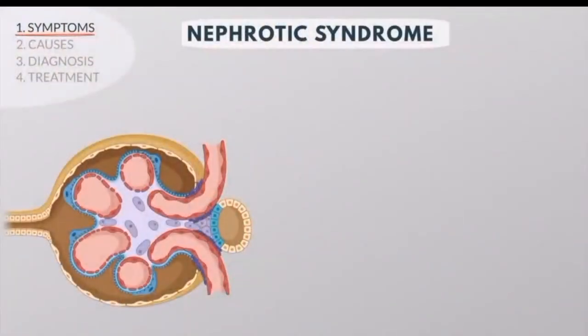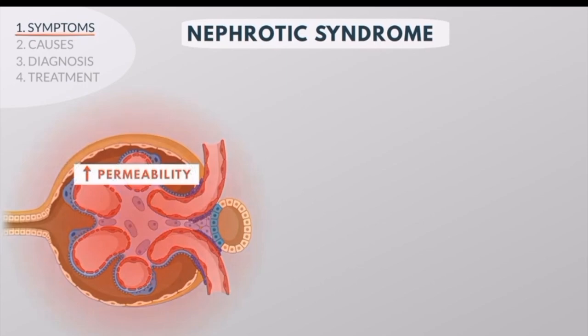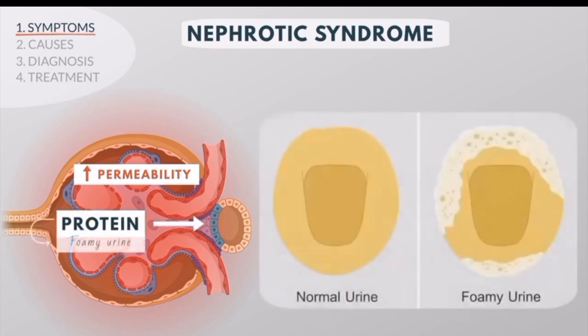In Nephrotic syndrome, the kidney injury is manifested as increased permeability of the capillary wall of the glomerulus, allowing too much protein to leak from the blood into the urine. One of the main clinical signs of this proteinuria is foamy urine.